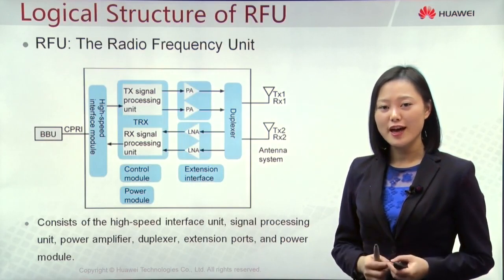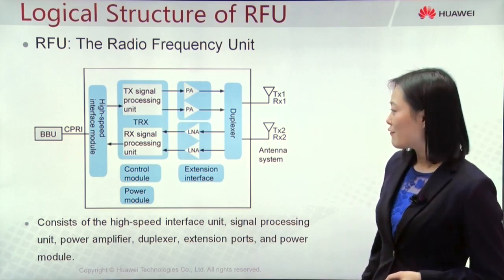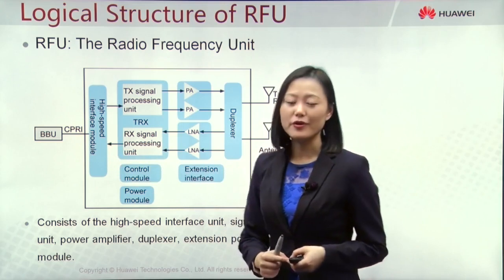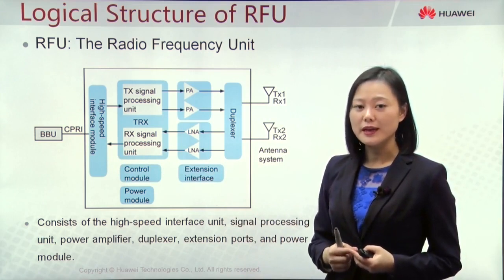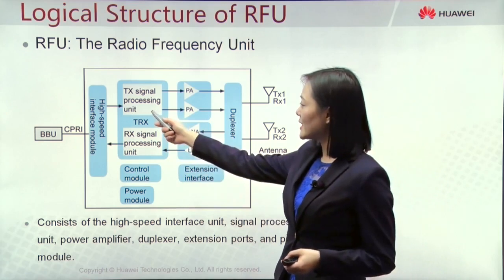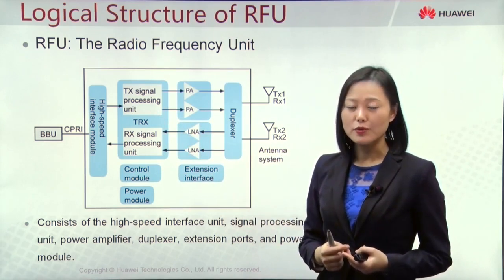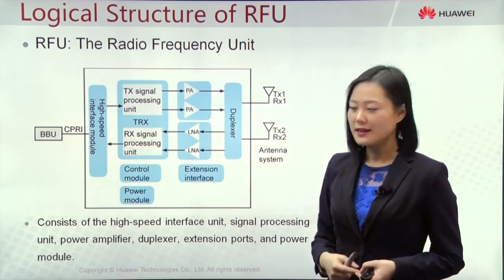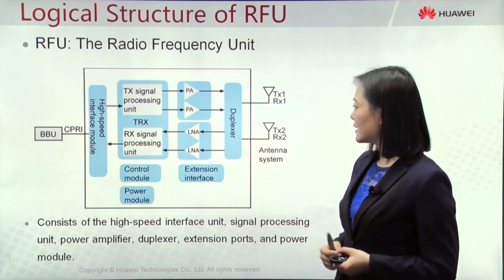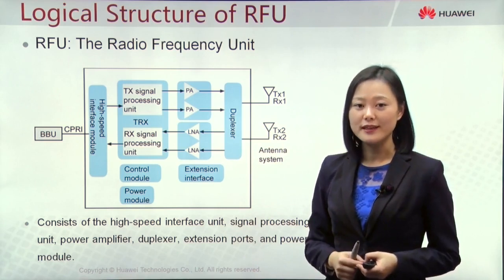Now let's check the logical structure of RFU. Let's take the downlink data as an example. The high-speed interface module will receive the optical signal from BBU and transfer it to an electric signal. It is then sent to the TX signal processing unit, which transfers the baseband signal to a high-frequency signal. Then DA conversion is performed, and the signal is sent to the PA to amplify the power. The duplexer filters this signal and sends it to the antenna system through the antenna port.